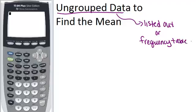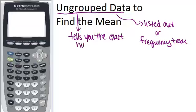Ungrouped data as opposed to grouped data tells you all of the exact numbers in your dataset so that you know, for example, that the numbers were 3, 7, 8, and 9 as opposed to just knowing that there were four numbers between 0 and 10.